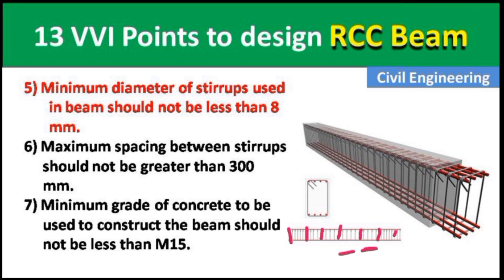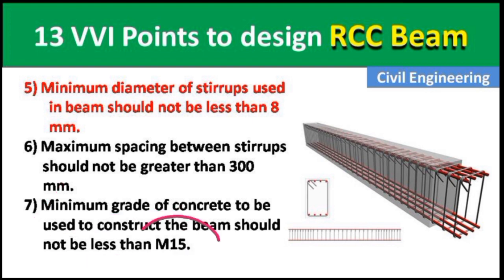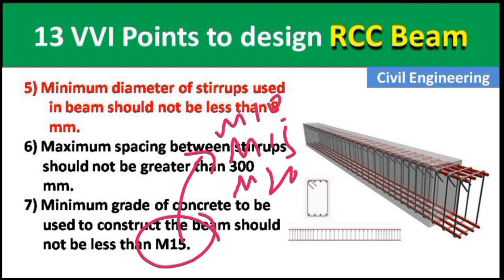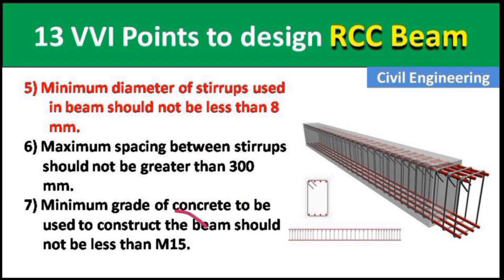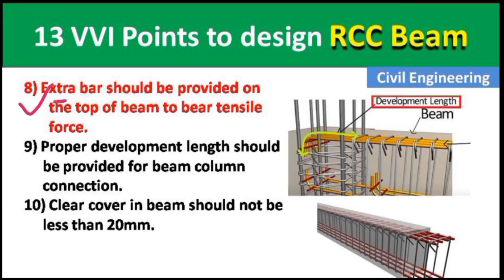Point 7: The minimum grade of concrete to be used to construct the beam should not be less than M15. There are different grades of concrete — M10, M15, M20, etc. — but the concrete used in a beam should not be less than M15 grade.